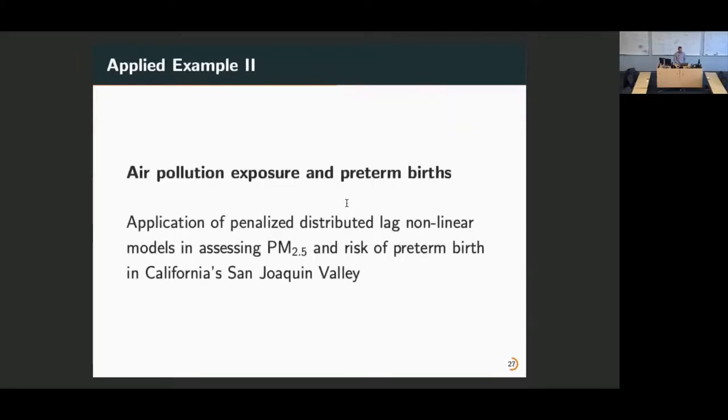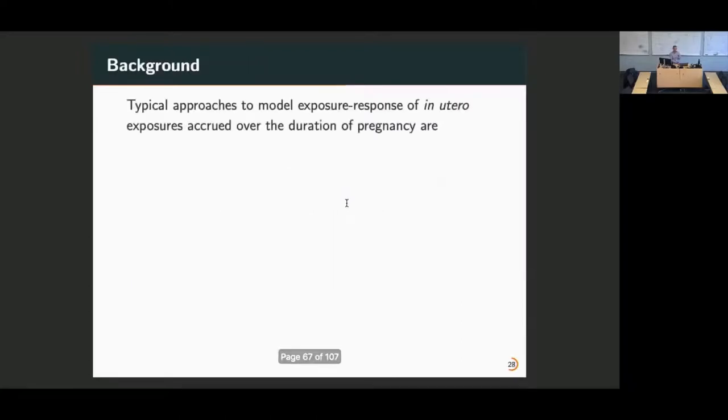Now I'm going to jump to the second example. This one has to do with air pollution exposure and preterm births. Specifically, we're applying penalized non-linear models to assess the effect of PM2.5 exposure and risk of preterm births in California's San Joaquin Valley. This didn't necessarily start in the same way as the other one. Our background was a little different. We didn't start with the causal question of interest in mind, but rather we started with the way that environmental epidemiology deals with prolonged exposures. In this case, we have exposures in utero that are occurring for the duration of the pregnancy. We're particularly interested in some outcomes that are happening at birth.